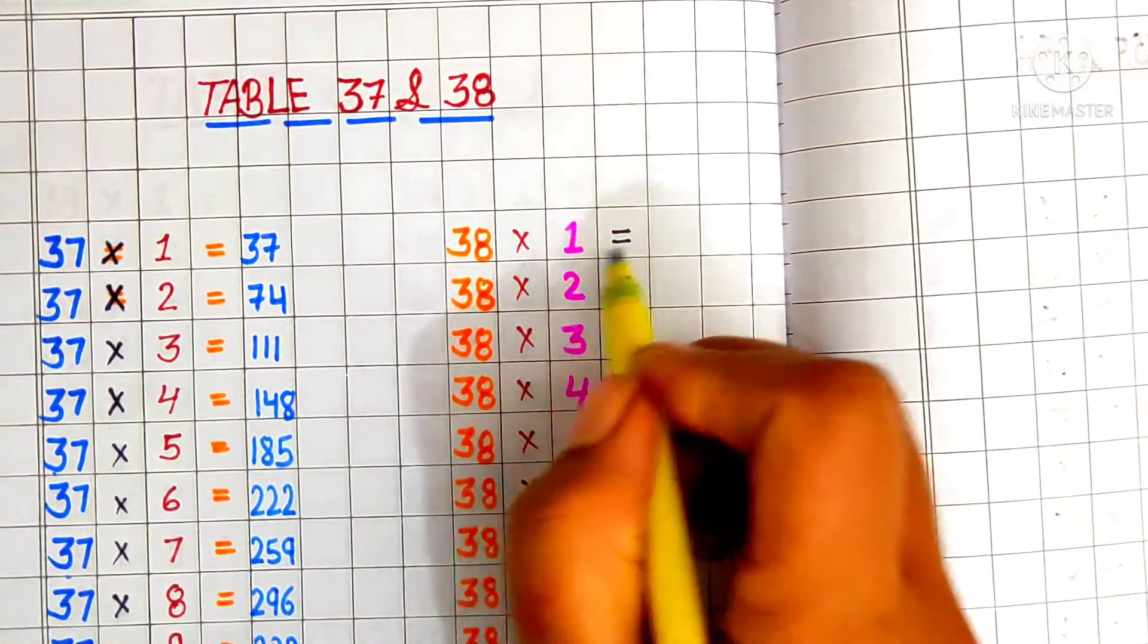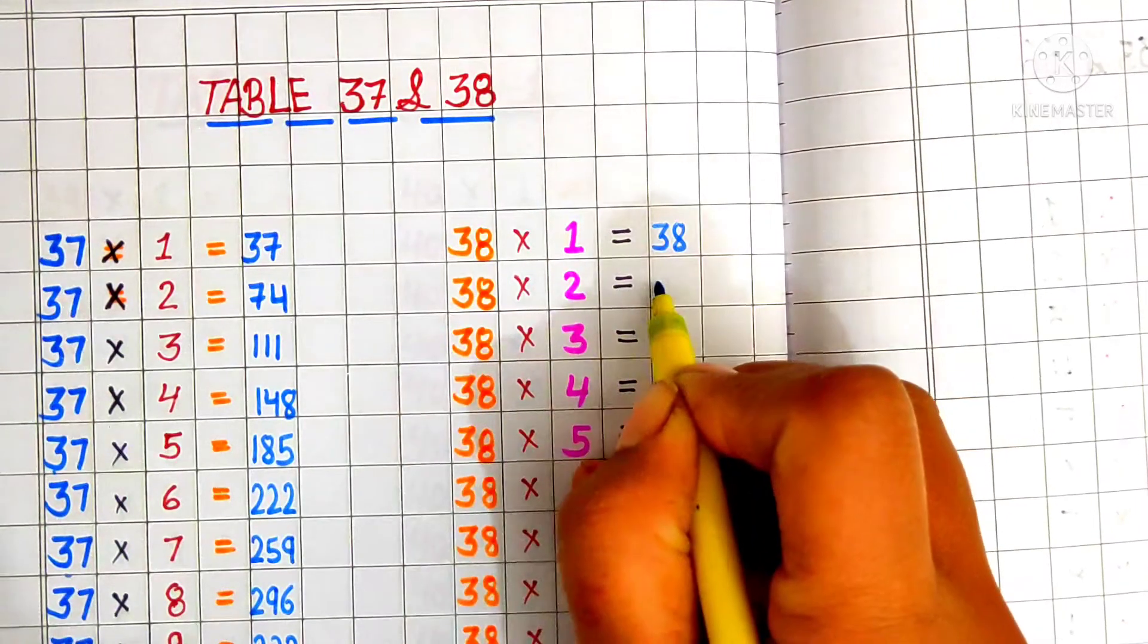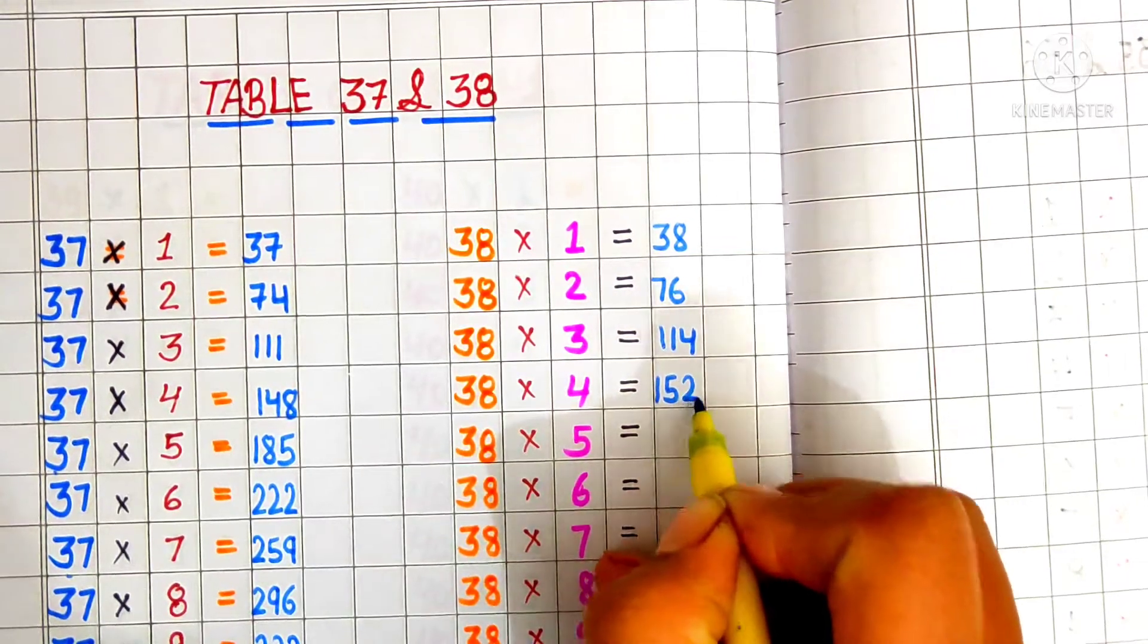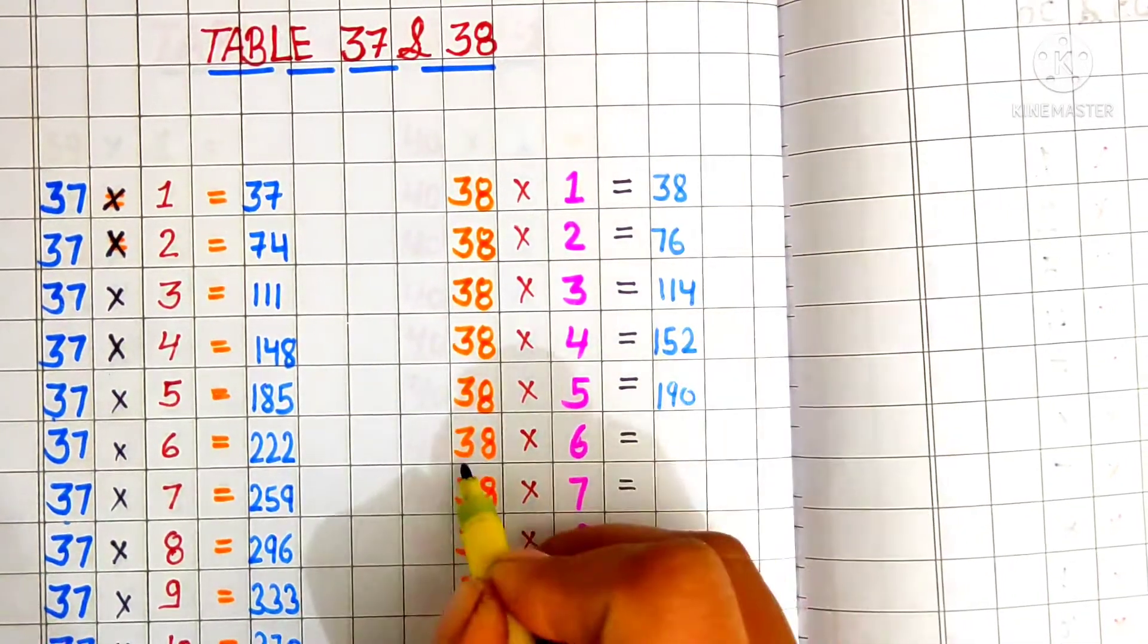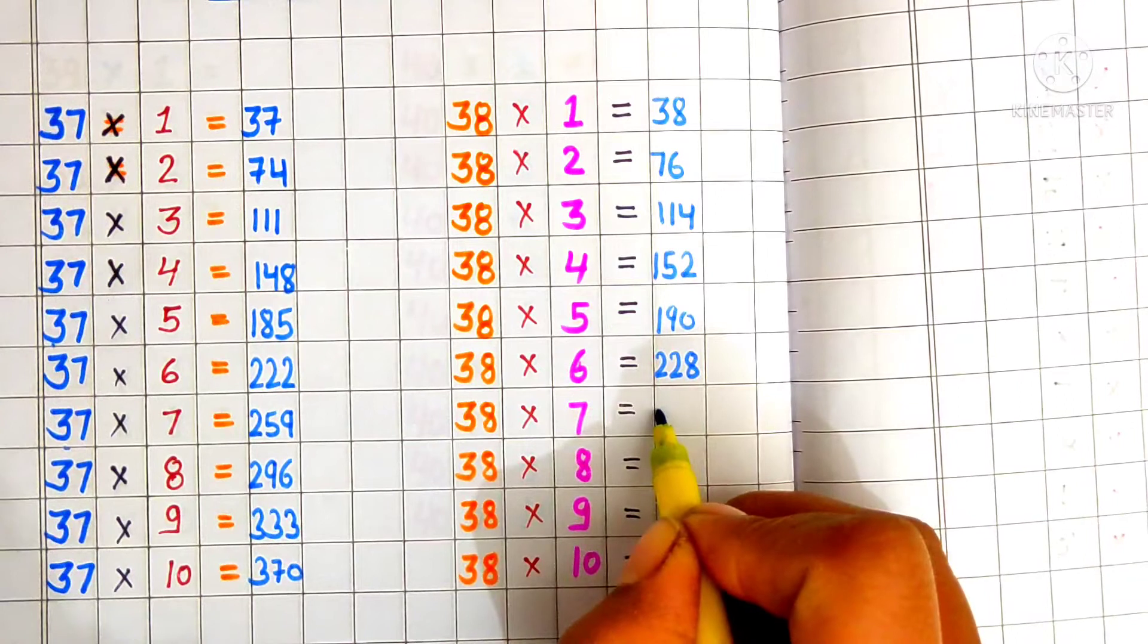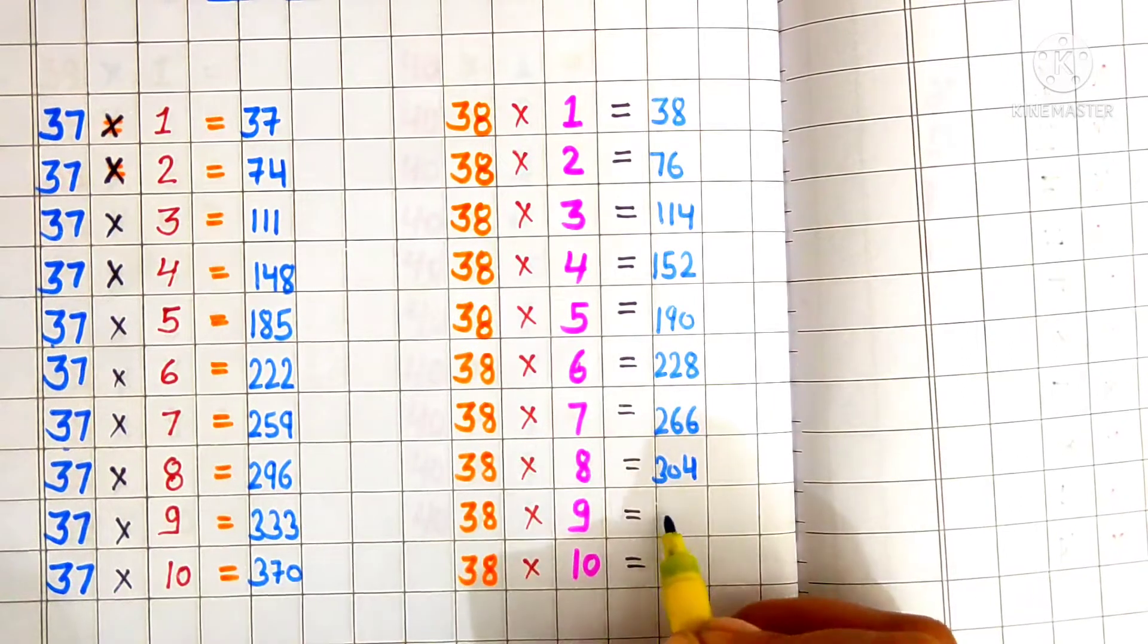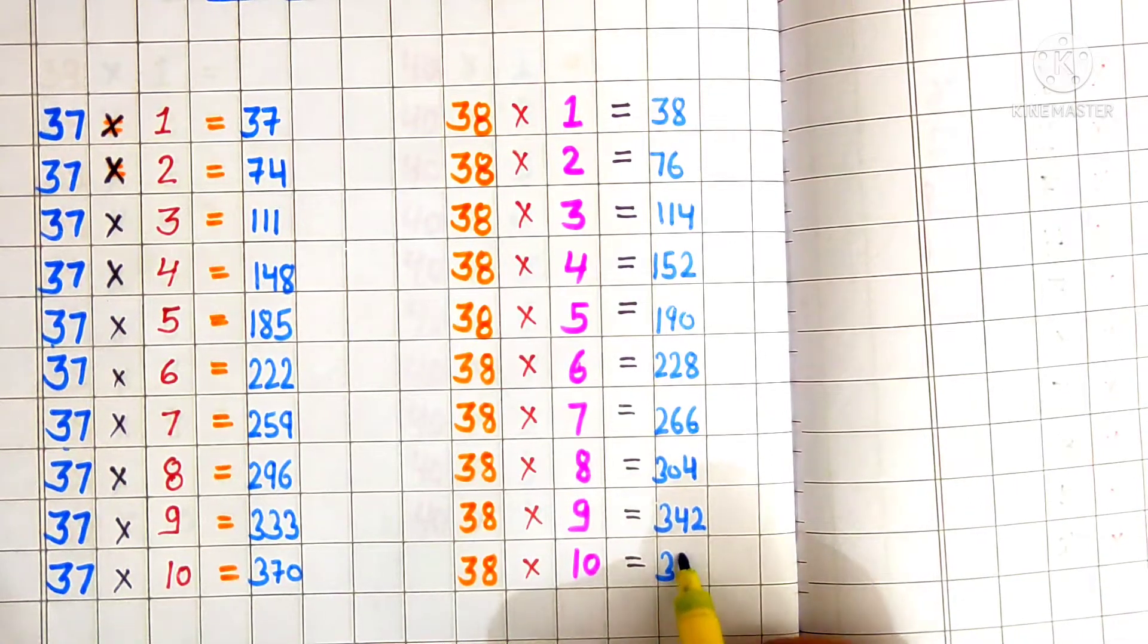We learn table of 38. 38 ones are 38. 38 twos are 76. 38 threes are 114. 38 fours are 152. 38 fives are 190. 38 sixes are 228. 38 sevens are 266. 38 eights are 304. 38 nines are 342. 38 tens are 380.